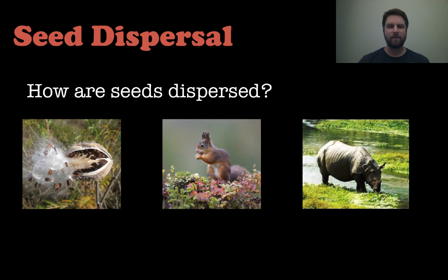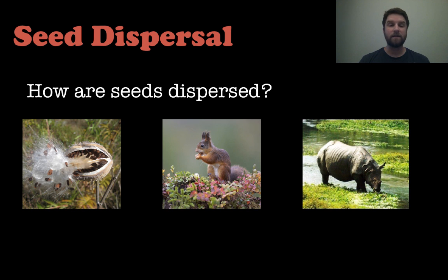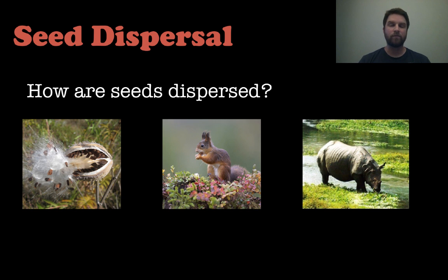The last thing to understand is how seeds get dispersed. Similar to pollination — where bees, birds, and wind help — seed dispersal can happen through wind if the seeds are very light. Certain animals will eat seeds or bury them, like squirrels do. Plant-eating animals can also eliminate seeds through their feces after eating a plant in one area and moving to another, dispersing seeds across locations.